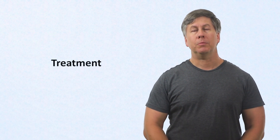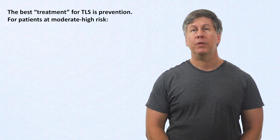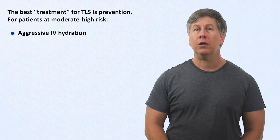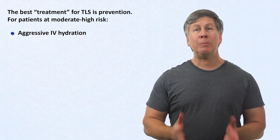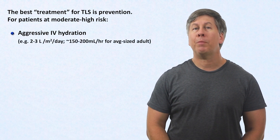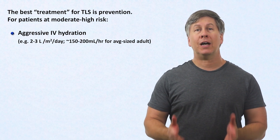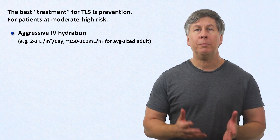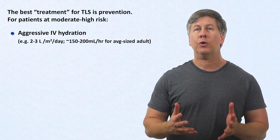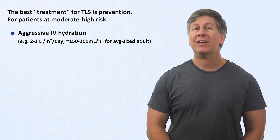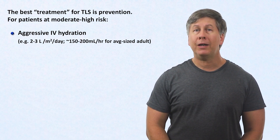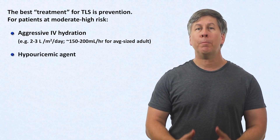The best treatment for TLS is prevention. For patients at moderate to high risk of developing TLS, give aggressive IV hydration when therapy is initiated, or even a little beforehand. In the absence of contraindications such as heart failure, you want to aim for about 2-3 liters per meter squared of body surface area per day. For the average-sized adult, this is around 150-200 milliliters per hour. In the past, it was thought that urine alkalinization was important as this increases the solubility of uric acid, but it also decreases the solubility of calcium phosphate, which is now recognized to be a bigger problem. You also want to treat the patients with a uric acid lowering agent, initiated before the cancer therapy.